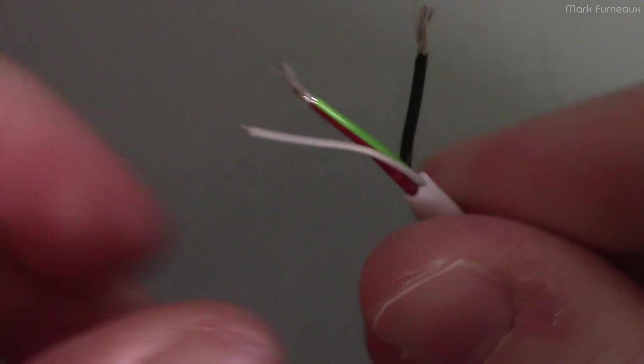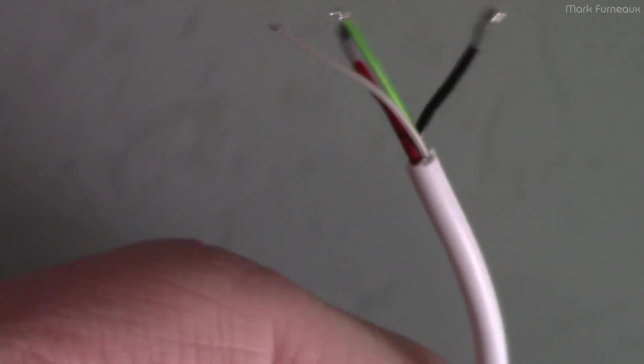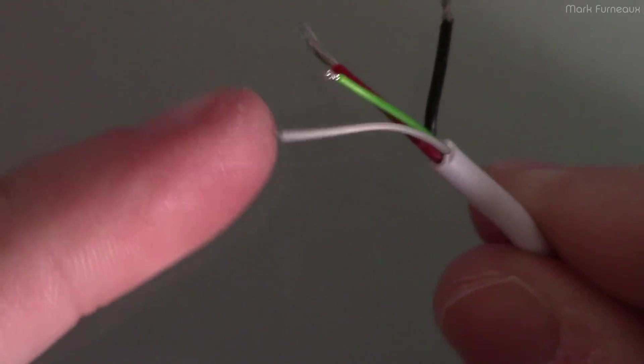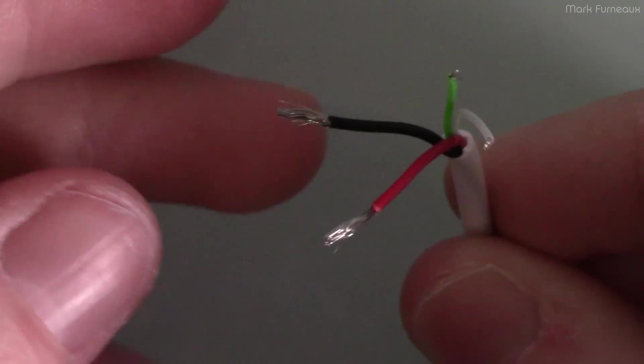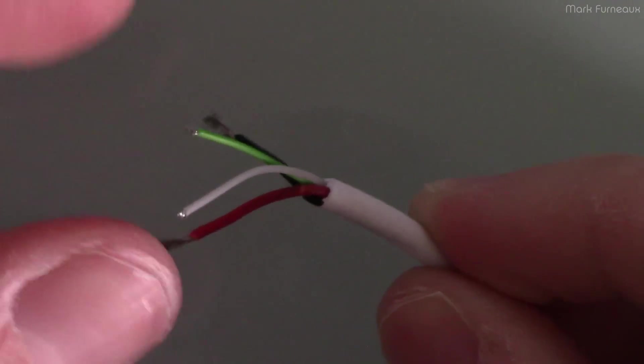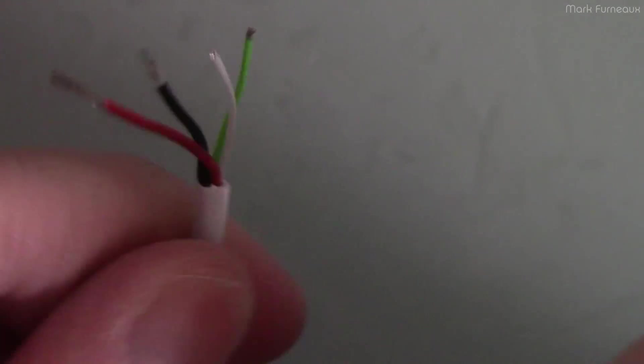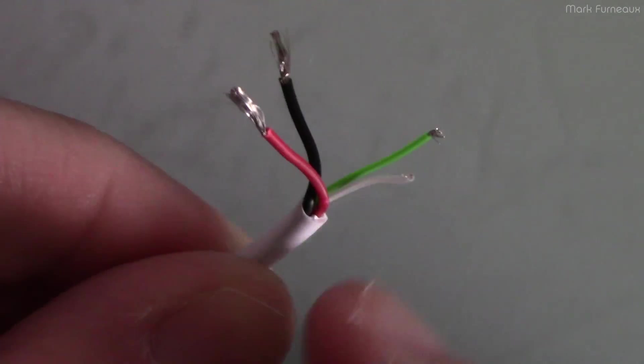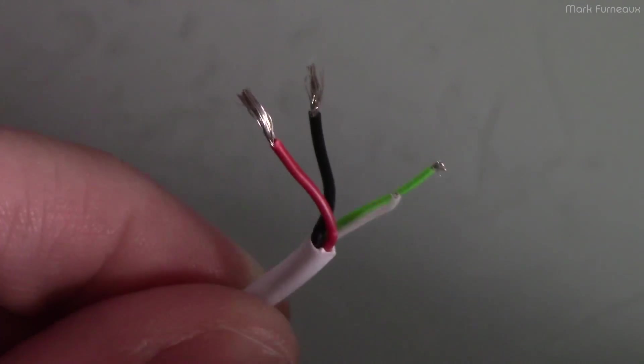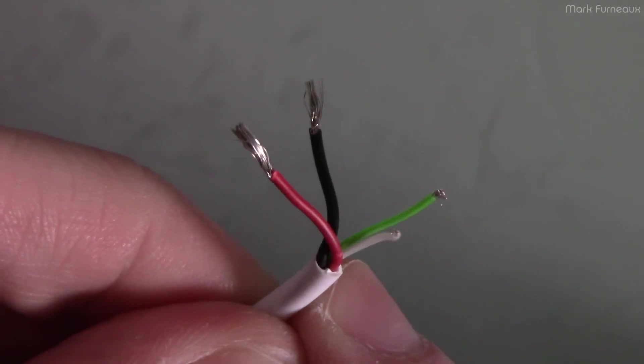And so of course, it's got four conductors. You wouldn't expect this to have two conductors. So of course, we've got the D plus and D minus. And then we've got the two power wires here. And of course, you'll notice that the D plus and D minus are thinner, which makes sense. They don't have to carry any substantial amount of current. But of course, these cables are primarily used for charging. And so of course, you want the power wires to be as thick as possible.